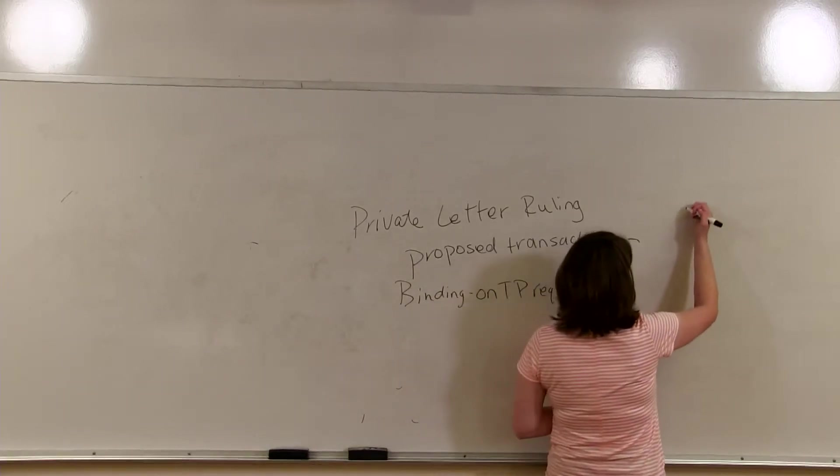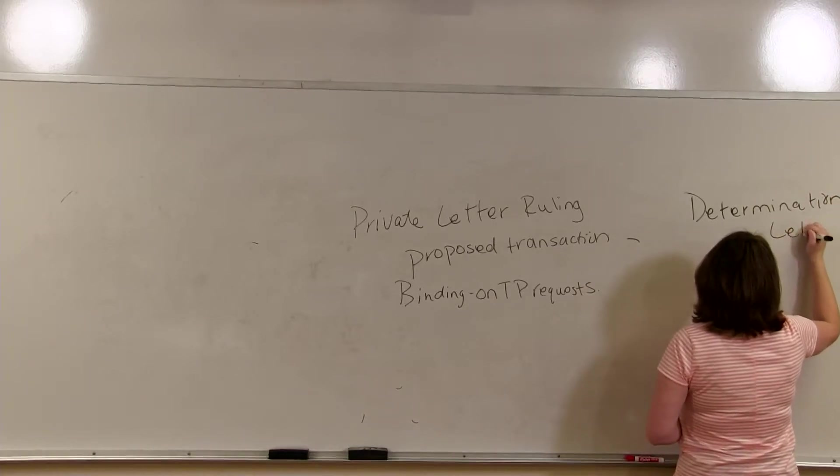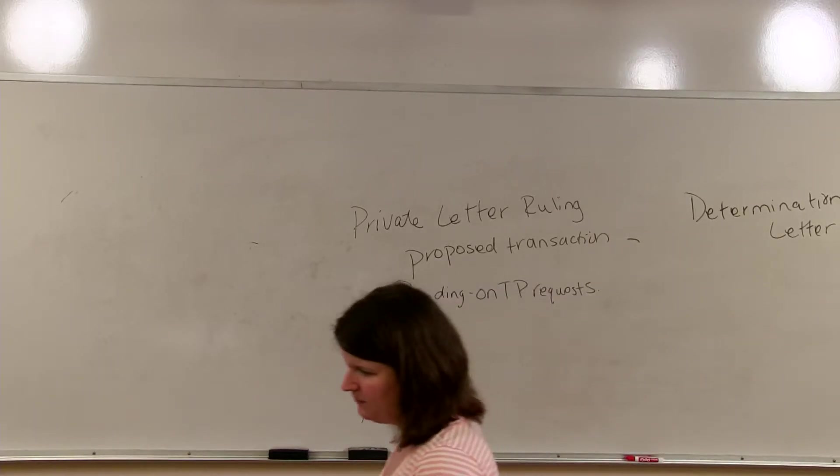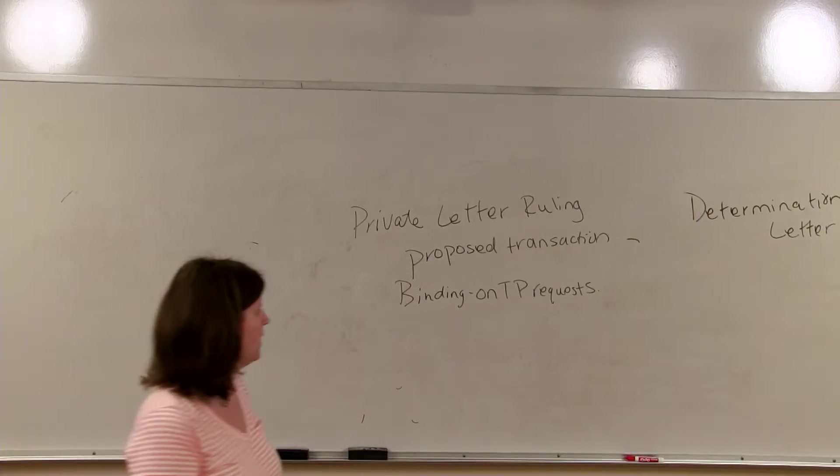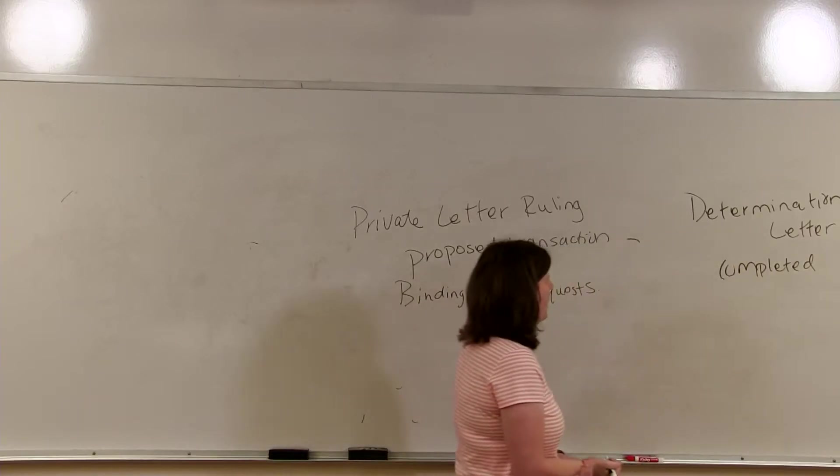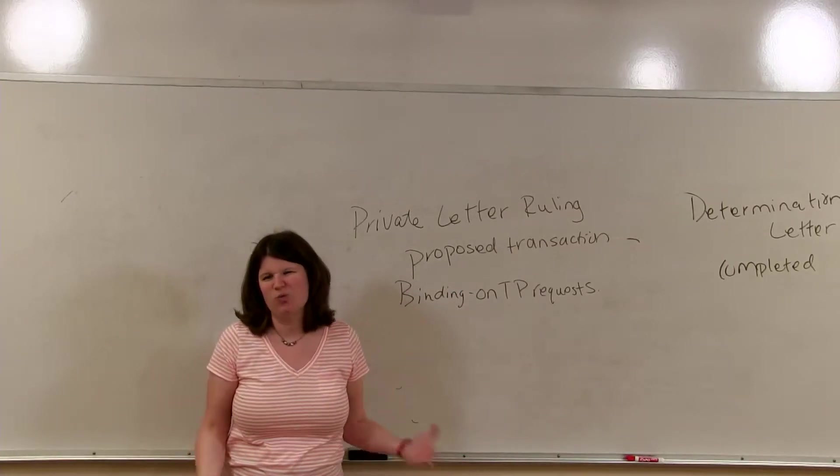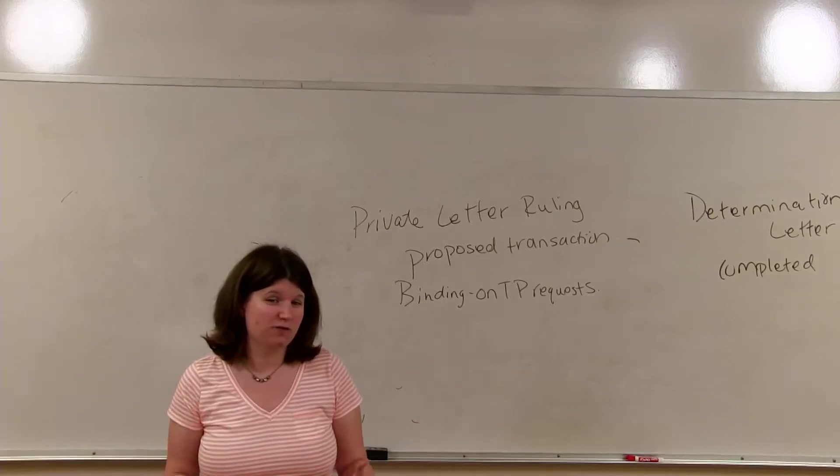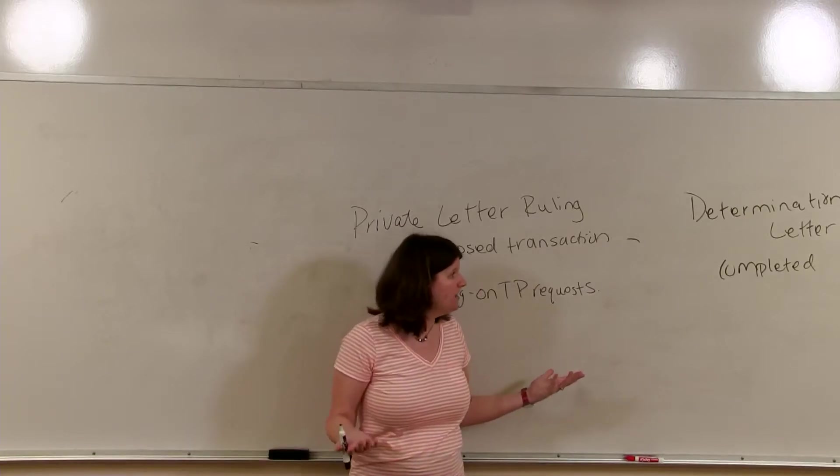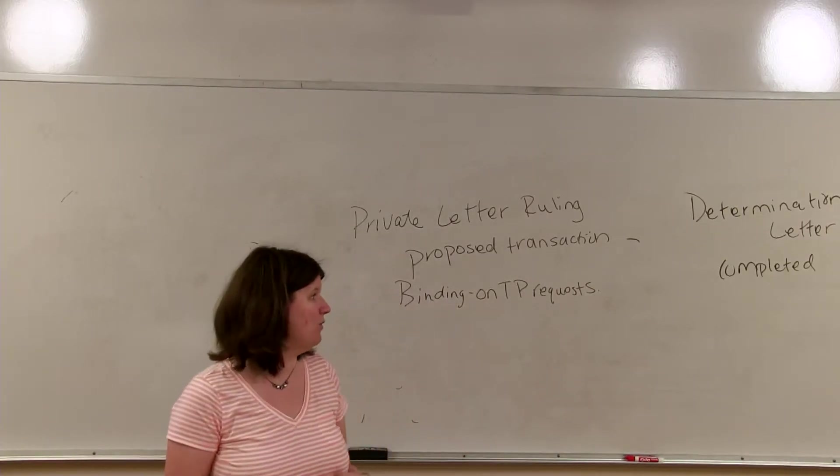The other type of private letter or letter ruling is a determination letter. Now, honestly, I probably wouldn't even mention this, but the book does. Determination letters are also requested by taxpayers, but it relates to a completed transaction instead of a proposed transaction. And determination letters are not available to the public. So you can't see the results of a determination letter, which is why I wouldn't really mention it as an administrative source of law because the public can't rely on it. If they don't know that it's there, they can't rely on it. But you can, as a taxpayer, request a determination letter if you so desire, and the IRS will let you know how they want to treat your transaction.